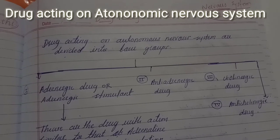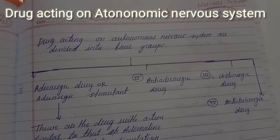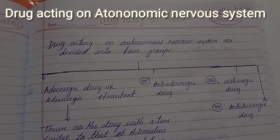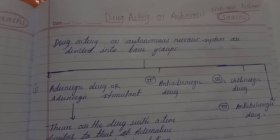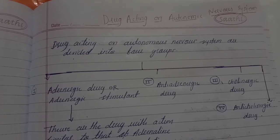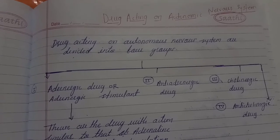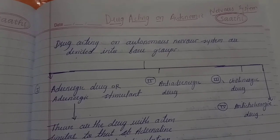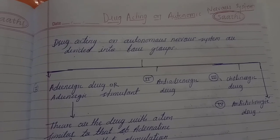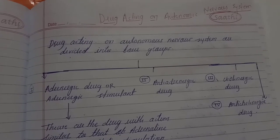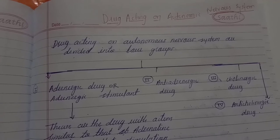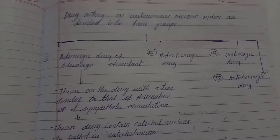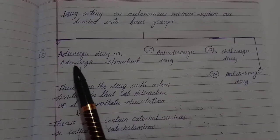Hello everyone, welcome to MedInfoHub channel. We are going to study the topic of drugs acting on the autonomic nervous system, which belongs to pharmacology. These drugs are divided into four groups: the first group is adrenergic drugs or adrenergic stimulants, and the second is anti-adrenergic drugs.